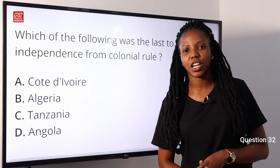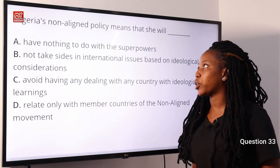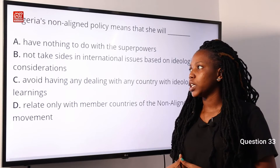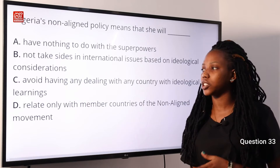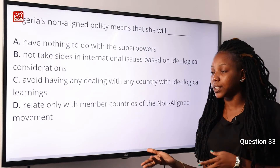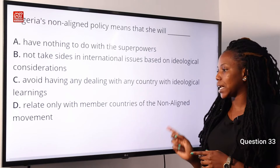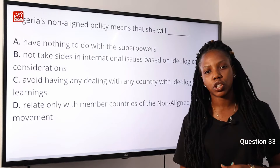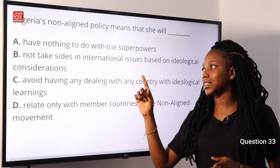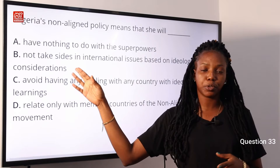Question 33. Nigeria's non-aligned policy means that she will dash. A, have nothing to do with the superpowers. B, not take sides in international issues based on ideological considerations. C, avoid having any dealings with any country with ideological leanings. D, relate only with member countries of the non-aligned movement. Non-alignment is non-commitment of a nation in any international issues. Nigeria's non-aligned policy means she will not take sides in international issues based on ideological considerations. Option B is the correct answer.